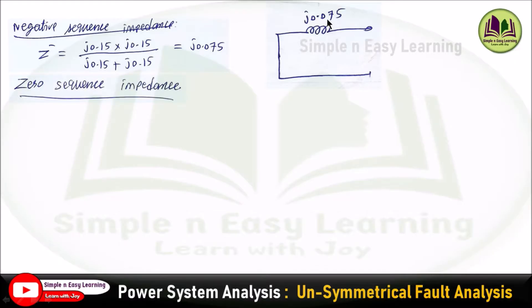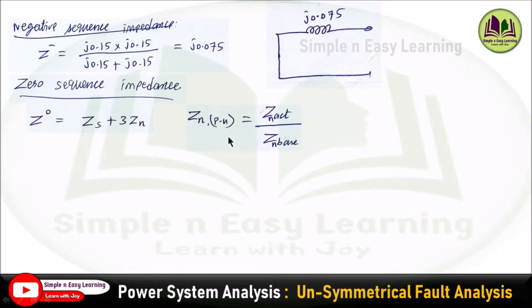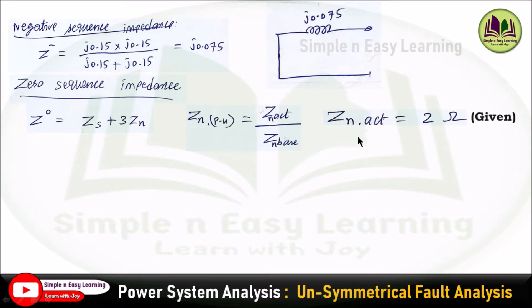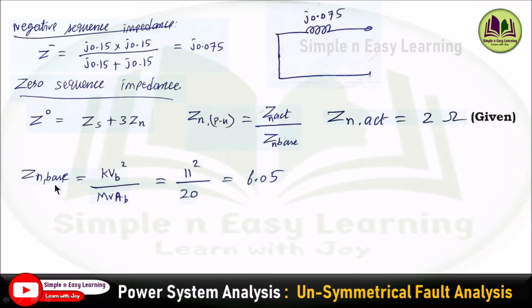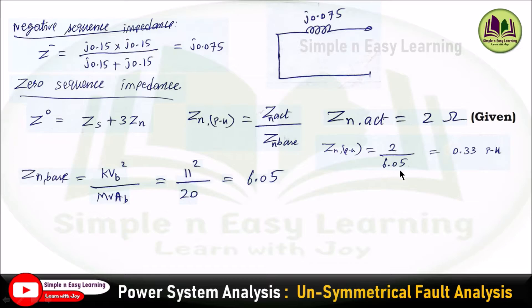For zero sequence impedance, Z0 = Zs + 3×Zn, where Zn is the neutral impedance. Since the neutral impedance is given in ohms, we need the per unit value: Zn(pu) = Zn(actual) / Zn(base). Zn(actual) = 2 ohm, and Zn(base) = KVB² / MVAB = 11² / 20 = 6.05 ohm. Therefore, Zn(pu) = 2 / 6.05 = 0.33 per unit.